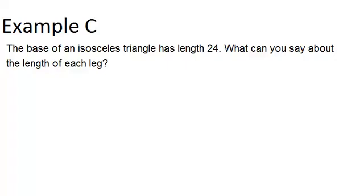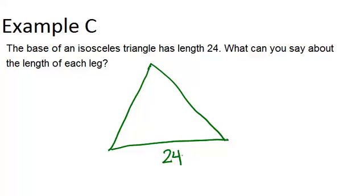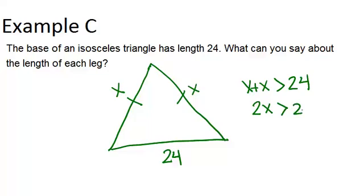For example C, it says: the base of an isosceles triangle has length 24. What can you say about the length of each leg? An isosceles triangle has a base of length 24. Drawing that in, that side is 24, and the two legs are congruent. In order to make this work, these two other sides must add up to be bigger than 24, because if they were less than 24 it wouldn't make a triangle. If we call these two sides x, we know that x plus x must be greater than 24. In other words, 2x has to be greater than 24, so x — each side length — has to be greater than 12.